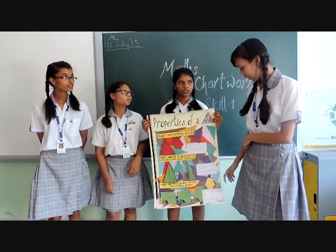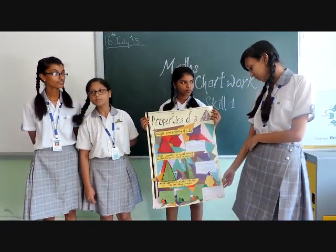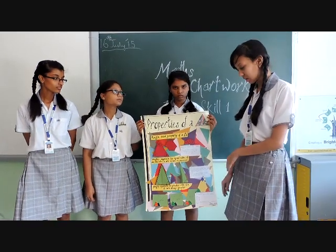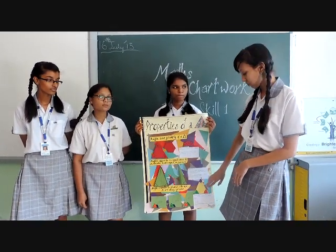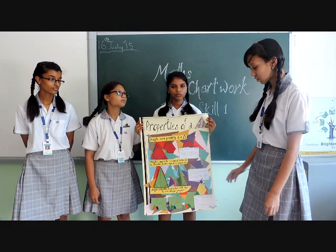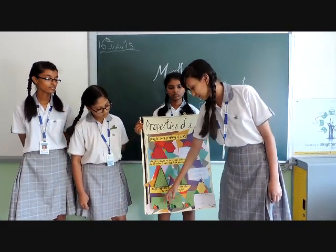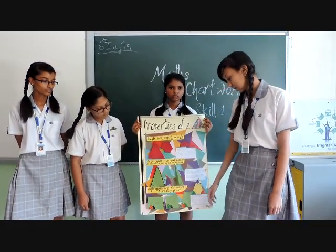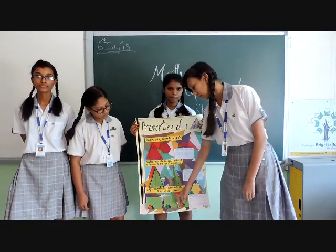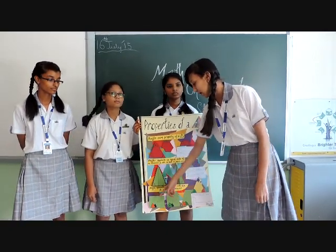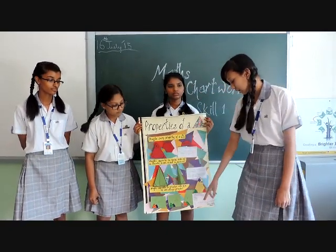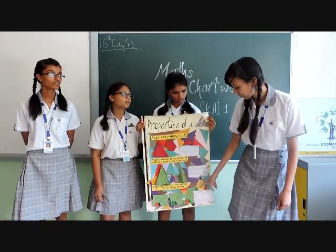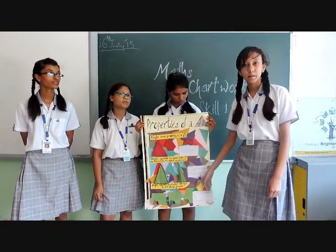The third property is angles opposite to the greater side of a triangle are always greater. We have taken three triangles, out of which we have cut the angles of two triangles, so we could prove that angle A is greater than angle B, angle A is greater than angle C, and angle C is greater than angle B. So angle A is the greatest angle, and the side opposite angle A is the greatest side.